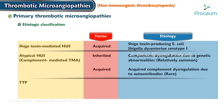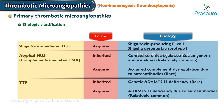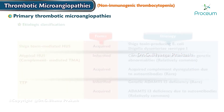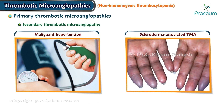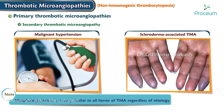TTP can be inherited or acquired. Deficiency of the ADAMTS13 gene can result in inherited TTP, while ADAMTS13 deficiency due to autoantibodies causes the acquired type. Secondary causes of thrombotic microangiopathy include malignant hypertension and scleroderma-associated thrombotic microangiopathy. Morphologic lesions are very similar in all forms of thrombotic microangiopathy regardless of etiology.